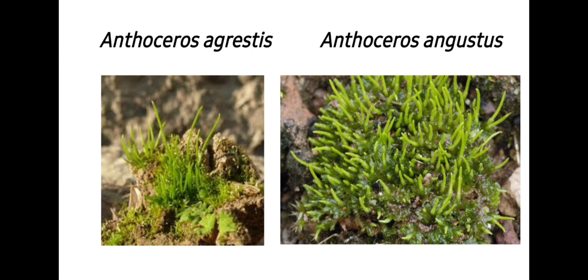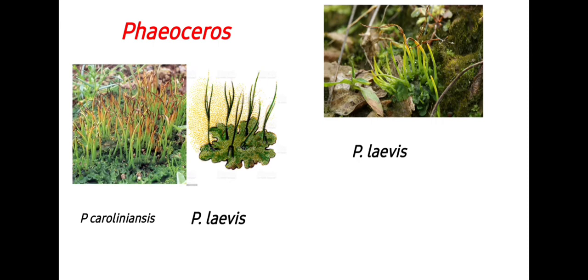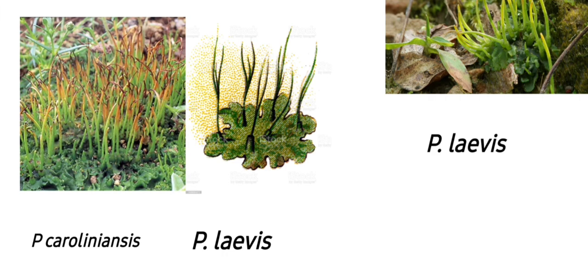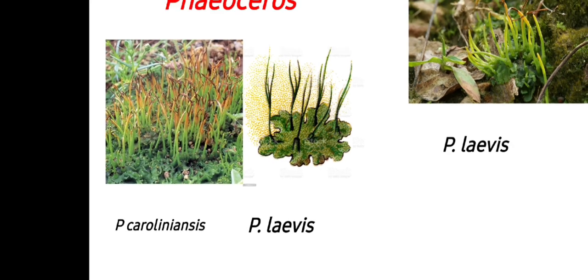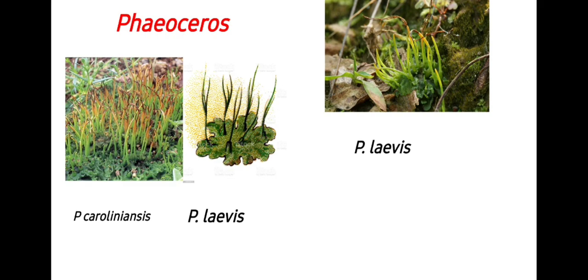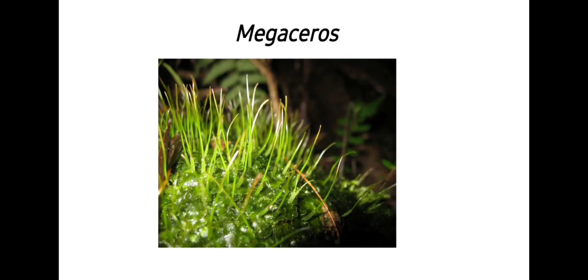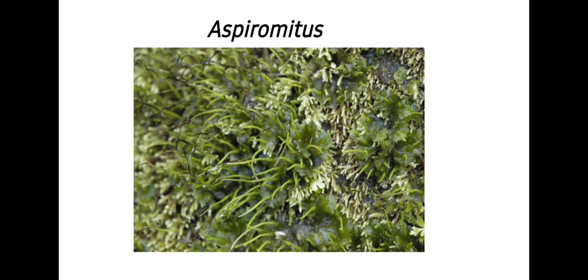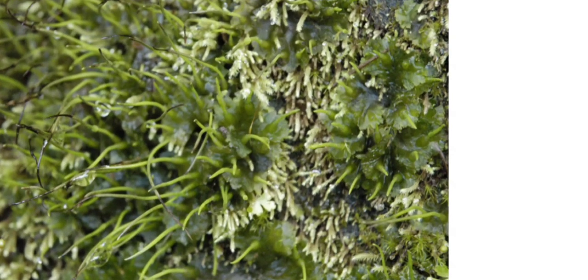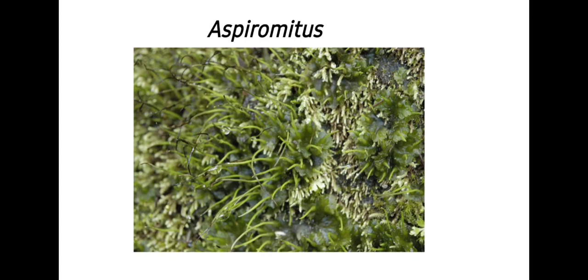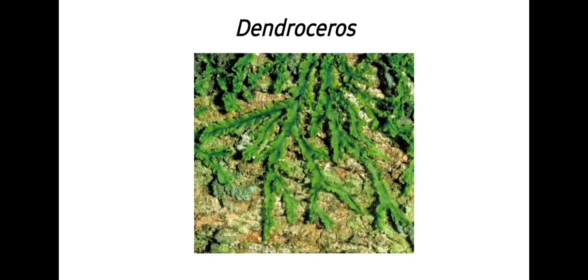The first is Anthoceros agrestis, then another species, Anthoceros angustus — you can see the habitat and general appearance of Anthoceros. Then there is Phaeoceros, with Phaeoceros carolinianus and Phaeoceros laevis shown in different habitats. The third is Megaceros. Next is Aspiromitus, with its habitat condition visible, and finally Dendroceros.